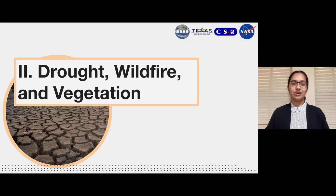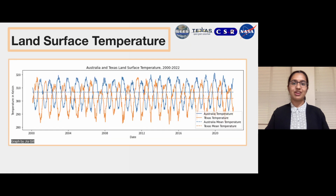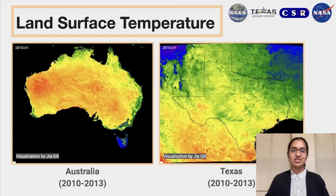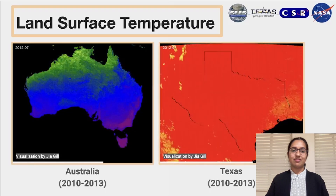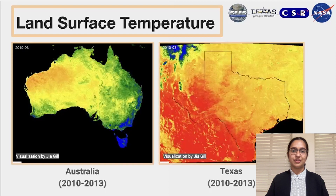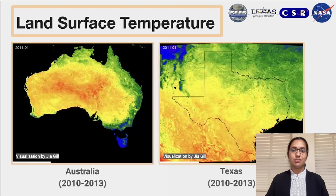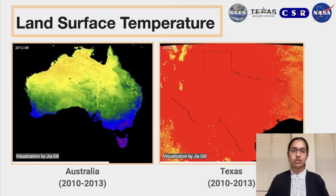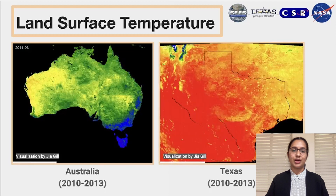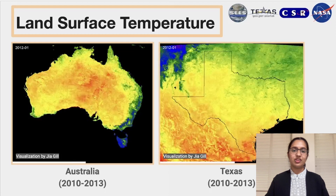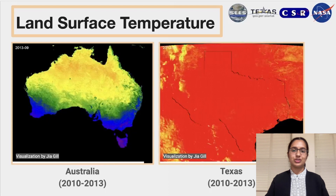The MODIS sensor on TERA measures land surface temperature daily. Here, we have graphed this data for the past 22 years, along with the mean temperatures for each region. These GIFs give a more visual depiction of land surface temperature. This GIF includes 2011, an El Niño year. You can see that when Australia's land surface temperature is colder, or more purple, Texas becomes warmer, or redder. The phenomenon causes opposite extremes for each region.